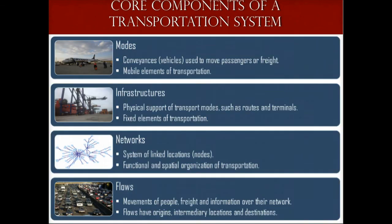It may be helpful to think of a transportation system in terms of its major components. Modes represent conveyances, mostly taking the form of vehicles that are used to move passengers and freight from place to place. Some modes are designed to carry only passengers or freight, while others can carry both. Infrastructures are the physical support of transport modes, where routes, like rail cars, canals, or highways, and terminals, like ports or airports, are the most significant components.